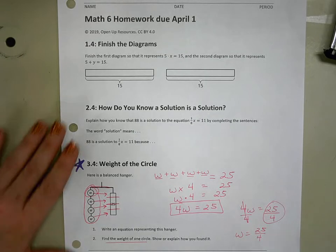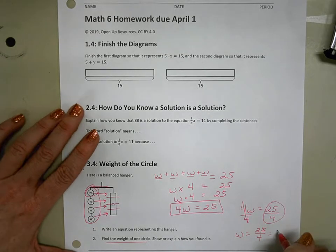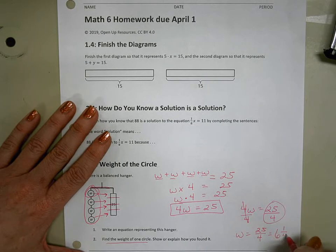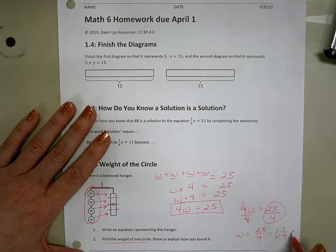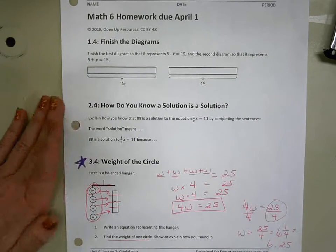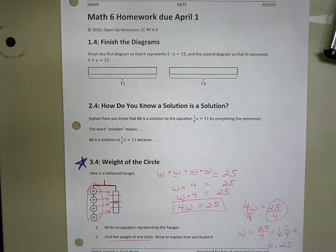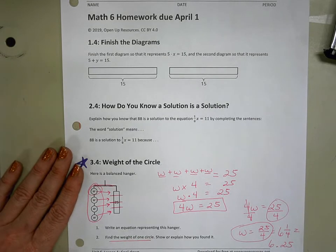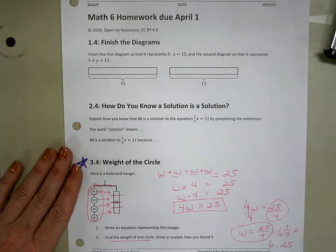Now if you wanted, could you make that into a mixed number and make it into six and one fourth? Sure. Could you make that into a decimal and make it six and twenty-five hundredths? Sure. And maybe those numbers make more sense to you. But this is a perfectly fine answer. It's in simplest form. And we were able to find it just by dividing 25 divided by four. Great answer.